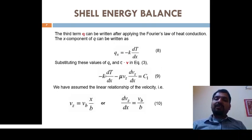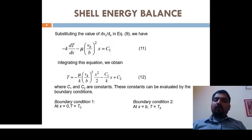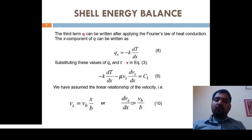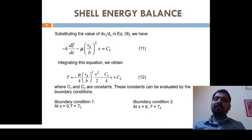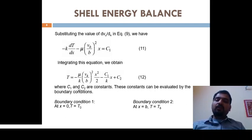Substituting the values of qx and τ·v into the combined flux equation, we get: −k(dT/dx) − μ(dvz/dx)·vz = C1 (equation 9). Using the linear velocity relationship vz / Vb = x/b, we have dvz/dx = Vb/b. Substituting both vz and dvz/dx into the equation gives: −k(dT/dx) − μ(Vb/b)²·x = C1. Integrating this with respect to x gives the temperature profile with a second integration constant C2.